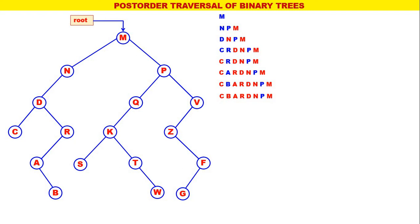Now the leftmost is P. The post-order for P is Q, V, P — with P processed. Now the leftmost is Q. The post-order for Q is K, Q — with Q processed. Q is replaced by K, Q with Q processed.